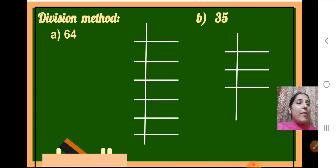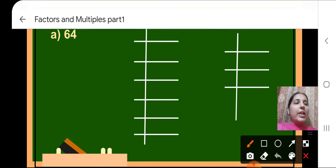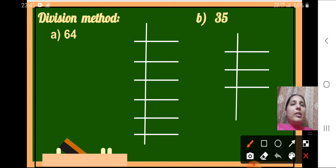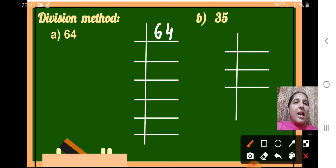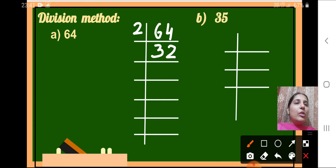We have to do the prime factorization of 64. First we will draw the division structure and write 64. Now, what is the smallest prime number that can divide 64? Since 64 is an even number — there is a 4 in the ones place — it will be divisible by 2. So we start with 2. Dividing 64 by 2, we get 32, and we write 32 here.